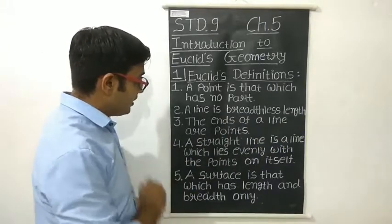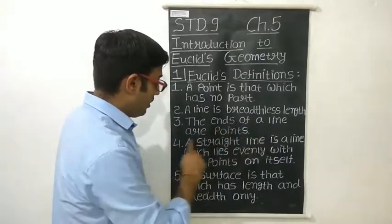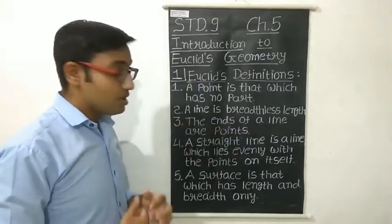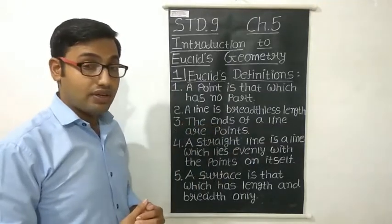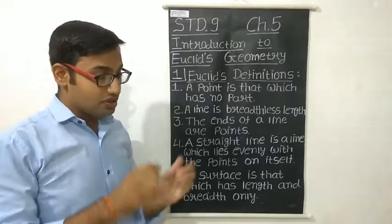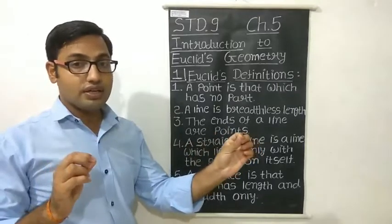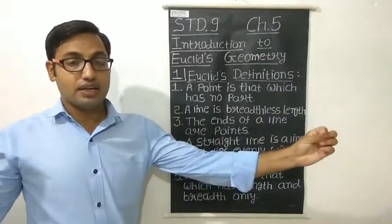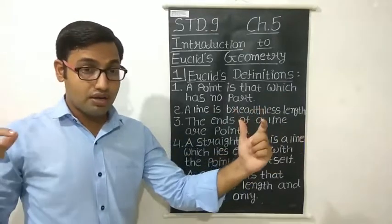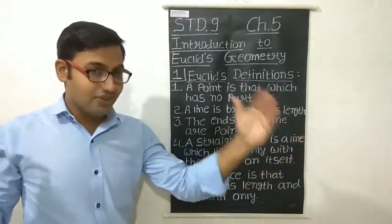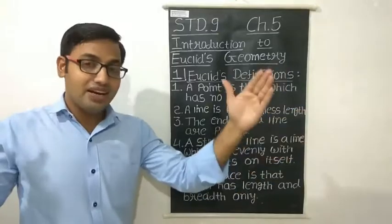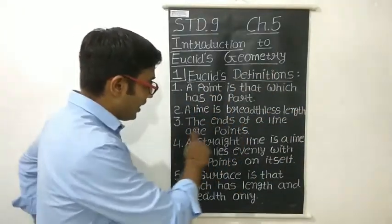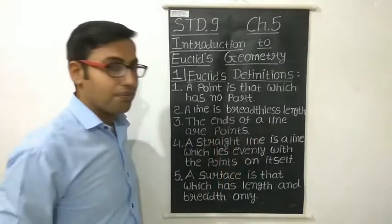The third definition: the ends of a line are points. A line has no end — it is a straight line continuous in both directions. But whenever it does end, those ends will be points, nothing else. So the ends of a line are points.